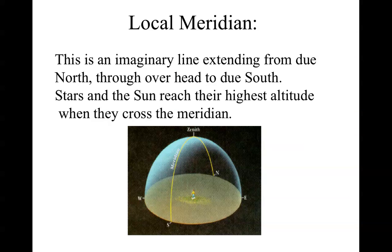One important concept we need to know in order to follow the following discussion is the concept of the local meridian. This is an imaginary line extending from due north through overhead to due south. Stars and the sun reach their highest altitude when they cross the meridian. They rise in the east, set in the west, reaching their highest point exactly halfway across the sky along this imaginary line.